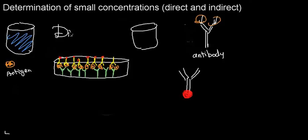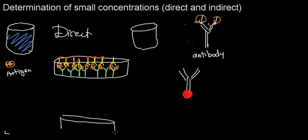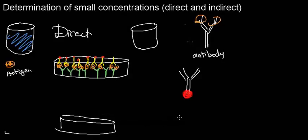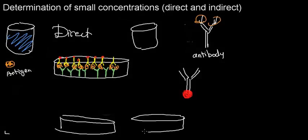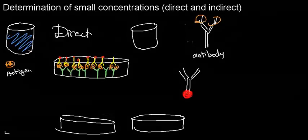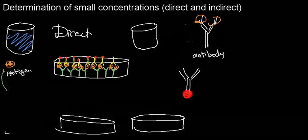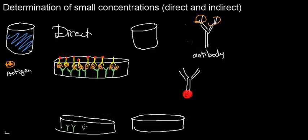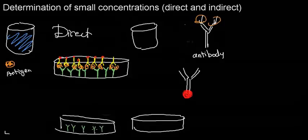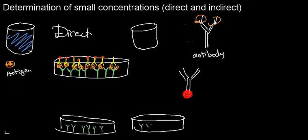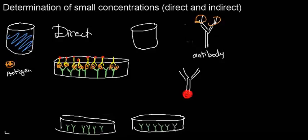This is the direct method of determination of small concentrations. Now I'll breeze through the indirect method. I have the same dish setup, with another dish right next to it as a control dish. I put the antibodies that stick to my molecule of interest at the bottom of both dishes.